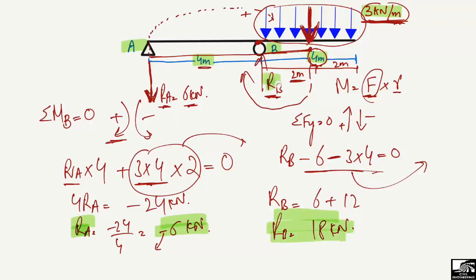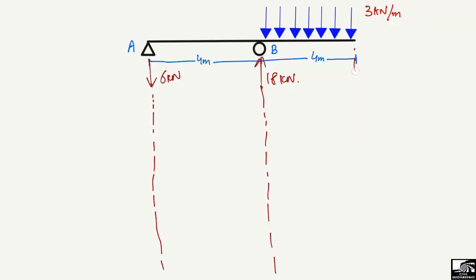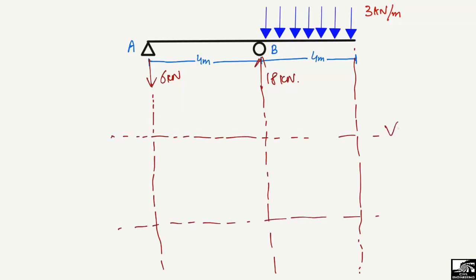RB = 18 kN with no negative sign, confirming the assumed direction is correct. Now we proceed to draw the shear force and bending moment diagrams. We draw reference lines: one for shear force in kilonewtons and one for bending moment in kilonewton-meters. RA = 6 kN acts downward, and RB = 18 kN acts upward.